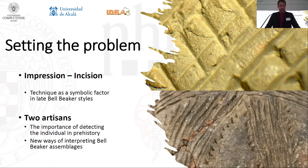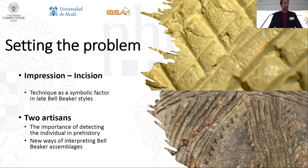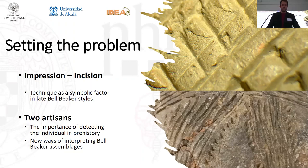Traditionally, the late Bell Beaker styles, especially in southern Europe and Africa, have been called incised or incised-impressed styles. But some authors have noted that it is the impressed technique that seems to characterize all of them, such as Cien Pozuelos or Palmela. However, later ceramic groups from the Bronze Age, which share decorative motifs with Bell Beaker, were made with an incised technique. This fact would be really interesting if we could demonstrate that all the late Bell Beaker styles are entirely made with impressed technique, while the later incised pottery would be different from the Bell Beaker phenomenon.